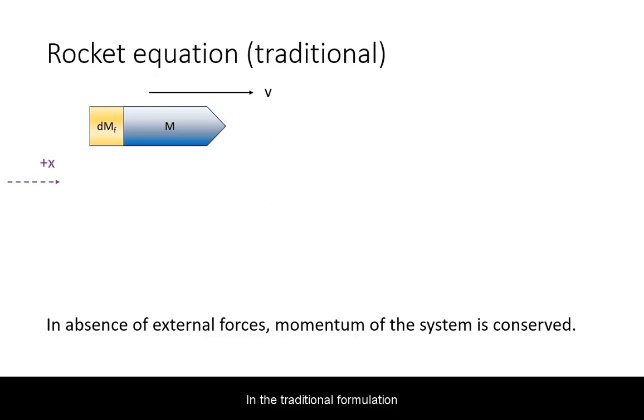In the traditional formulation of the rocket equation, we ignore outside forces and hence can apply the conservation of momentum. Here is a popular way of derivation. Start with the rocket plus a differential mass of fuel traveling at velocity v.